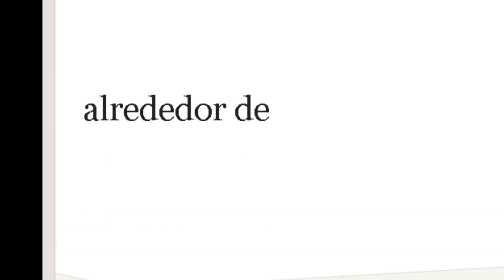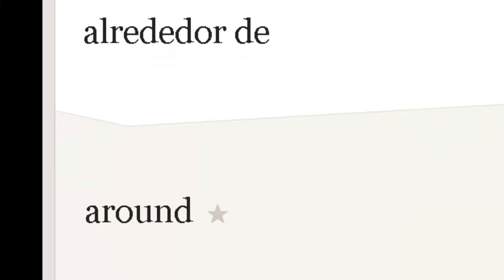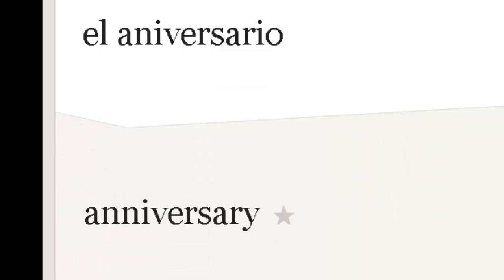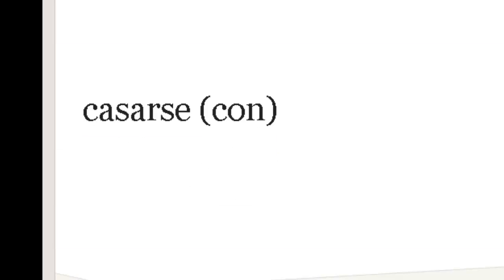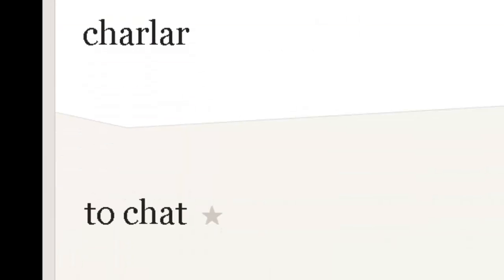Alrededor de. Alrededor de — around. El aniversario. Note: the most common mistake here is that English speakers will spell it with two N's, but there's only one. Aniversario. Casarse con — to get married to, to get married to each other. Charlar — to chat. Some places it would be more 'platicar,' but for this chapter we'll say charlar.